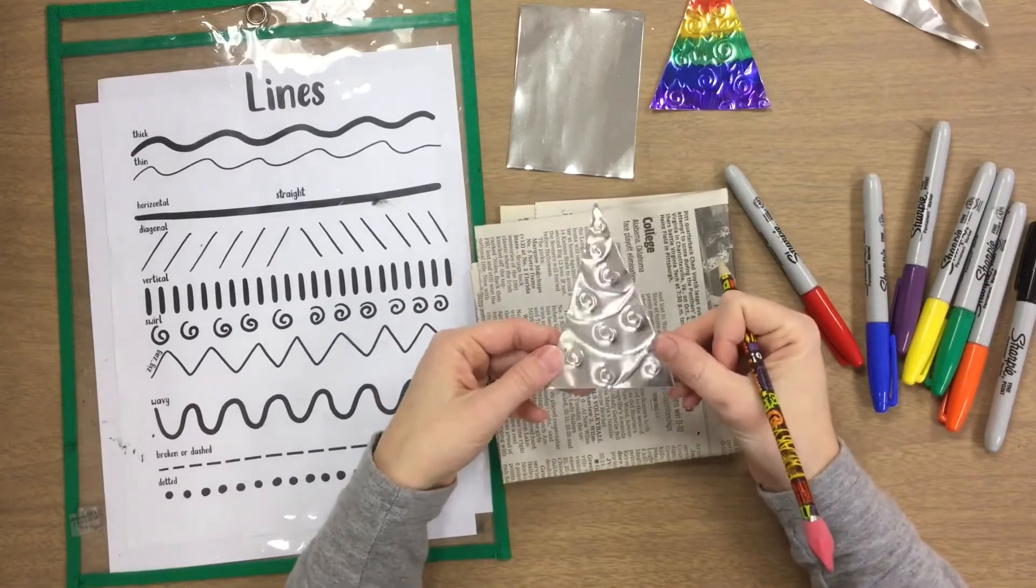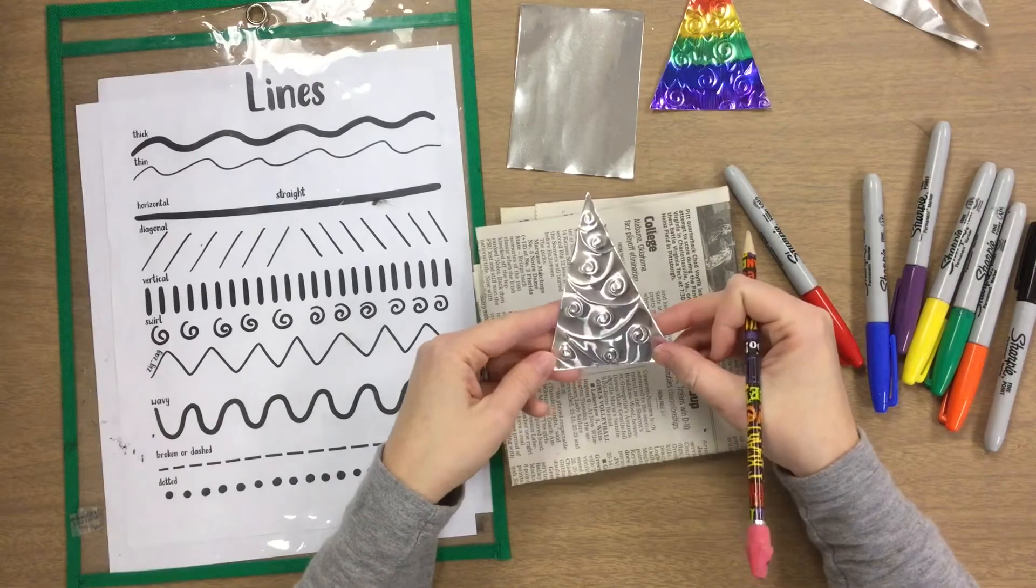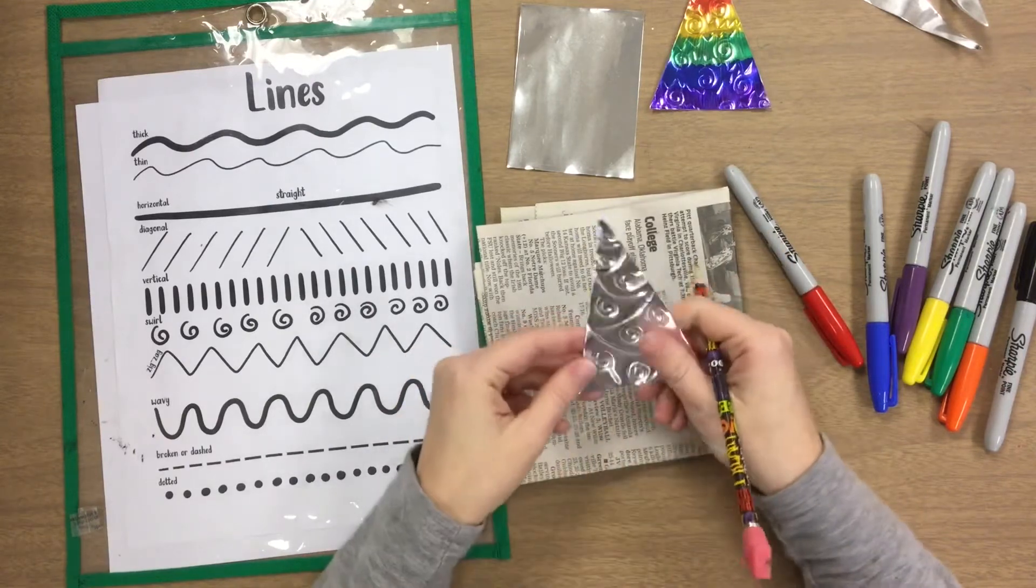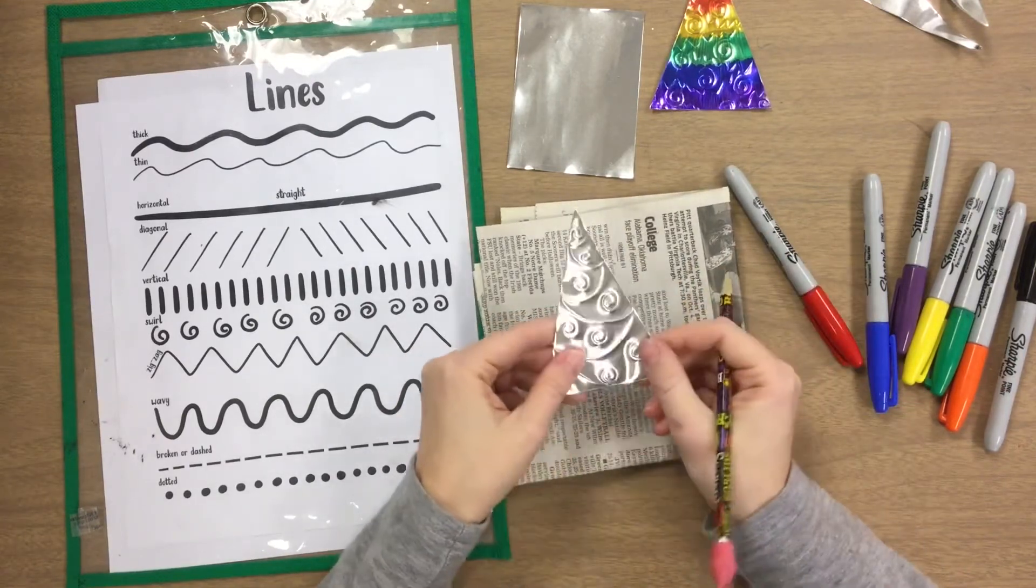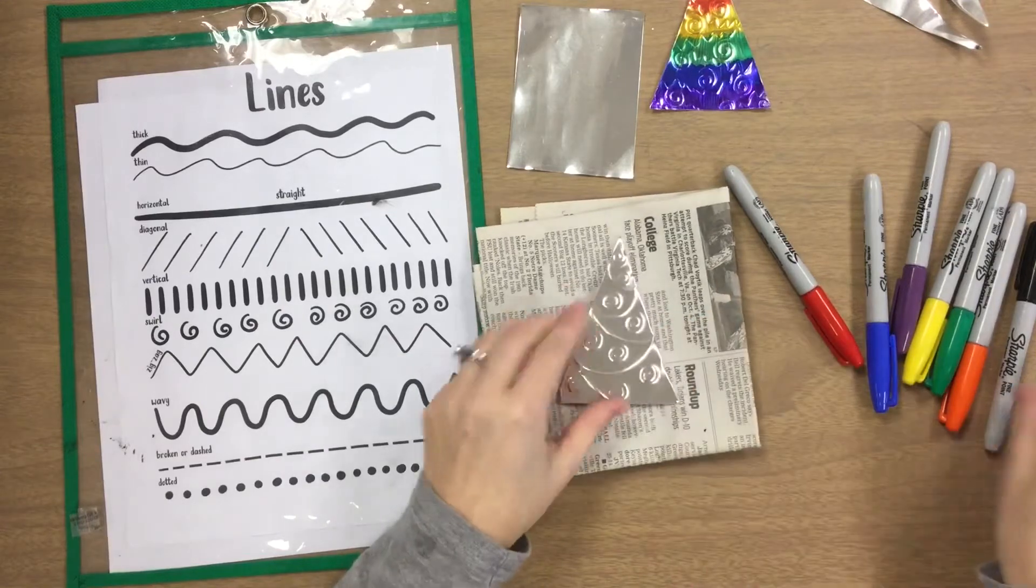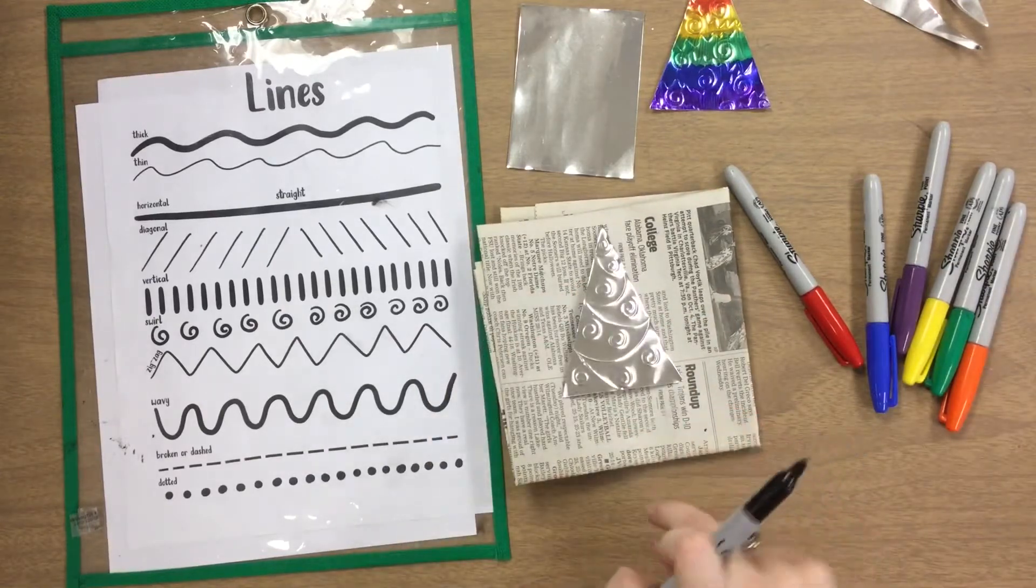You can see the design of my tree. I could decide whether I like the side that has the designs pushed in or pushed out. Once I've decided, I'm going to put my name on the back.